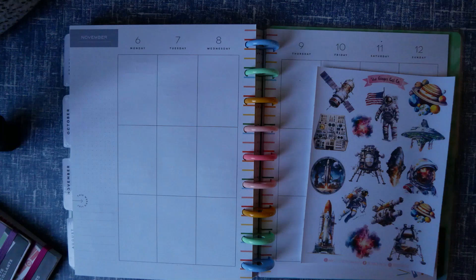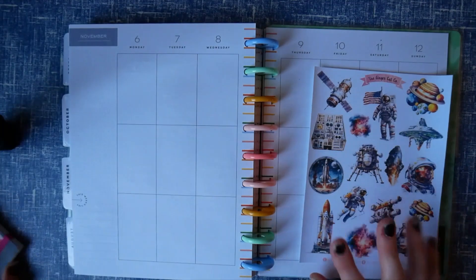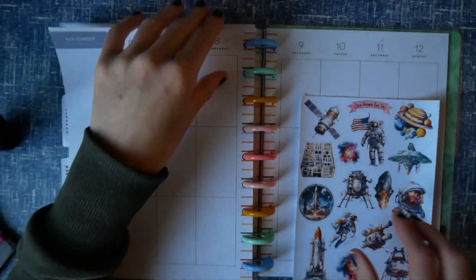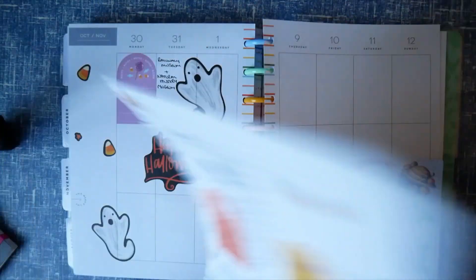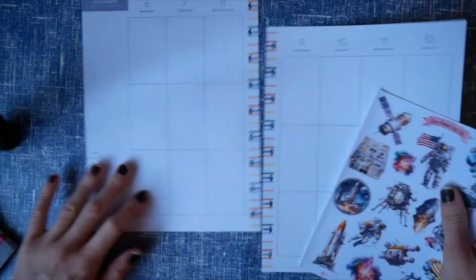Hello everyone and welcome back to my channel. This is a plan with me for the week beginning the 6th of November in my classic happy planner, and I am using this set of space astronaut themed stickers from the Ginger Cat Company.